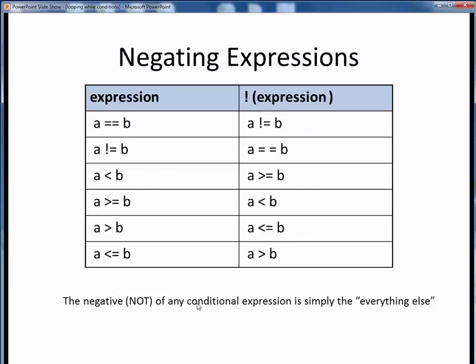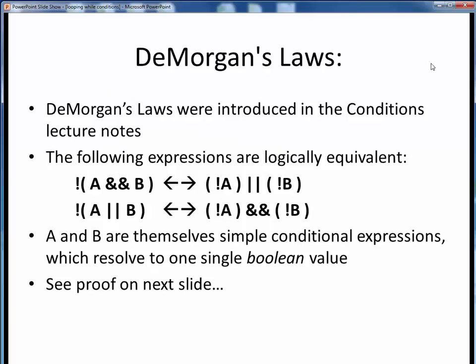In general, the negative or logical NOT of any conditional expression simply represents the everything else. For example, if A is equal to B, then the NOT of that, or the everything else, is A NOT equal to B. If A is less than B, then the NOT of that, or the everything else, is A greater than or equal to B.